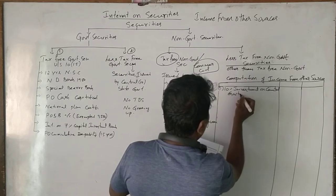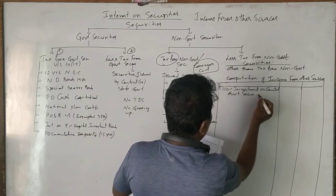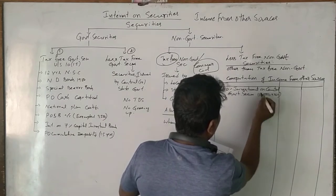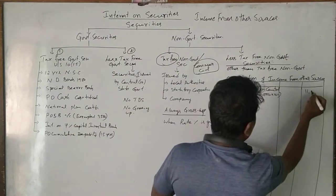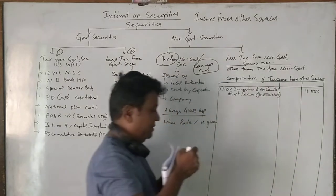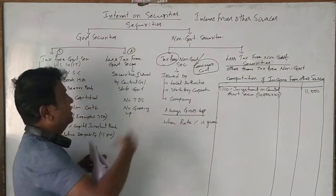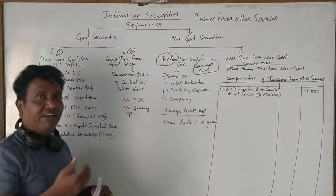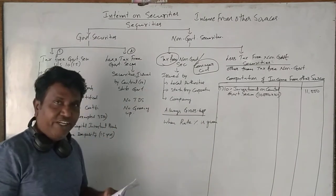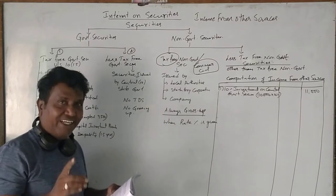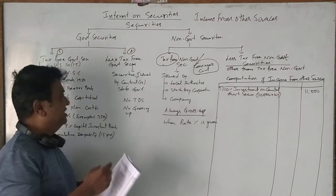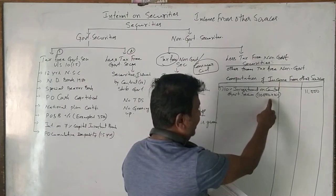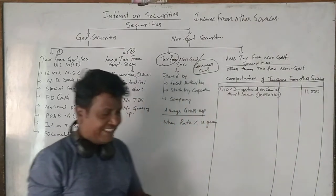Government securities: on ₹1,10,000 at 10%, the interest is ₹11,000 rupees, which is fully taxable. Any securities issued by state government or central government — we directly take the amount of investment with the rate of interest and tax it.